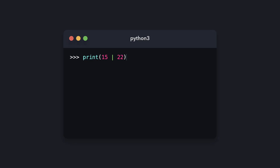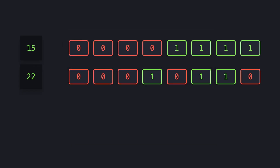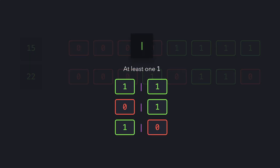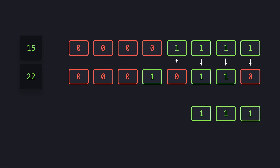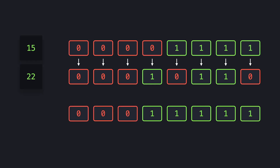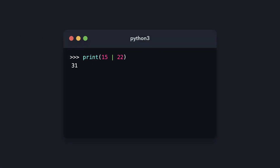Now let's look at the other bitwise operator — the bitwise OR (|). We'll be using the same integers. This bitwise operator returns 1 if either both bits are 1 or if only one of the bits is 1. In this example: 1 OR 0 returns 1, 1 OR 1 returns 1, 1 OR 1 returns 1, 1 OR 0 returns 1, and 0 OR 1 returns 1. The rest of the 0s return 0. These bits represent the integer 31, so when we print the result, 31 gets printed.